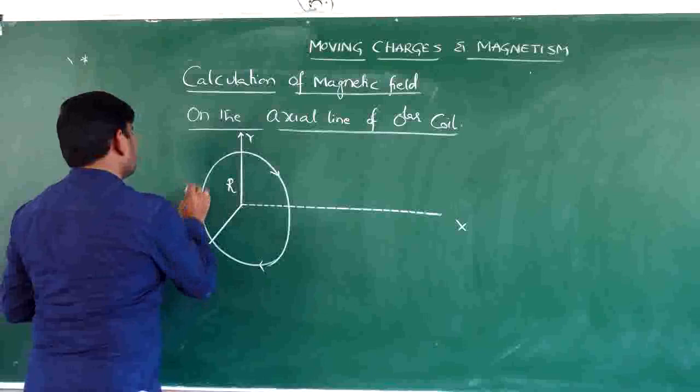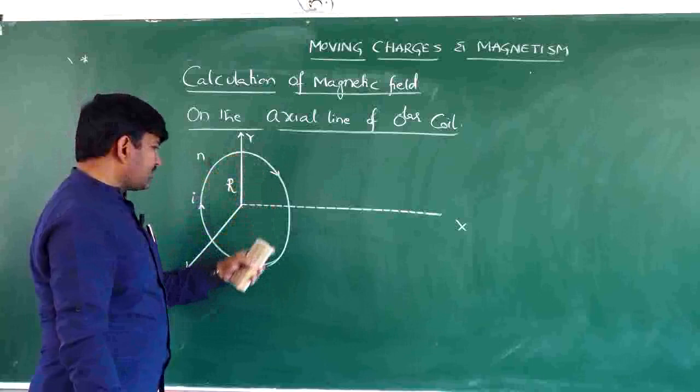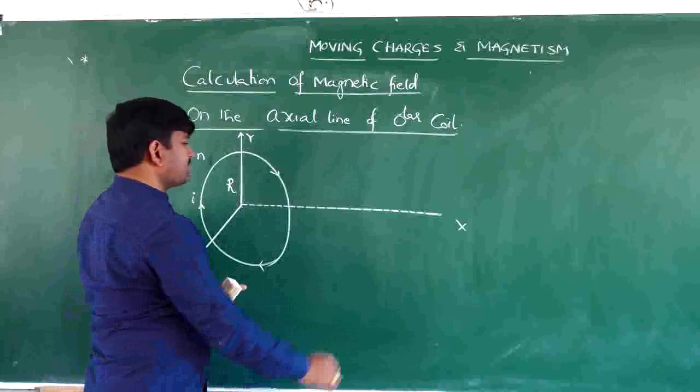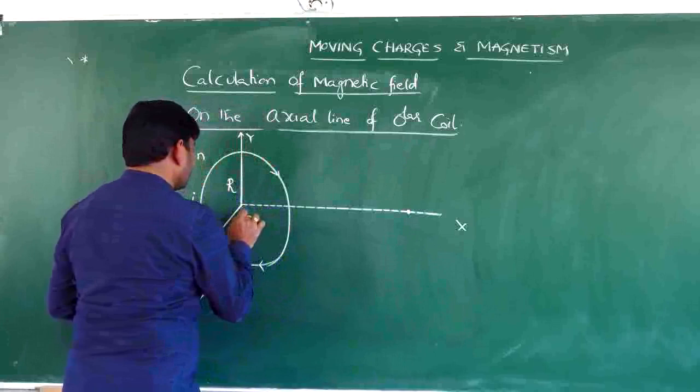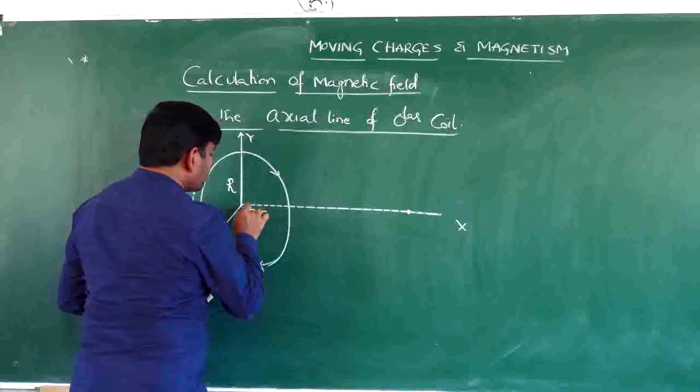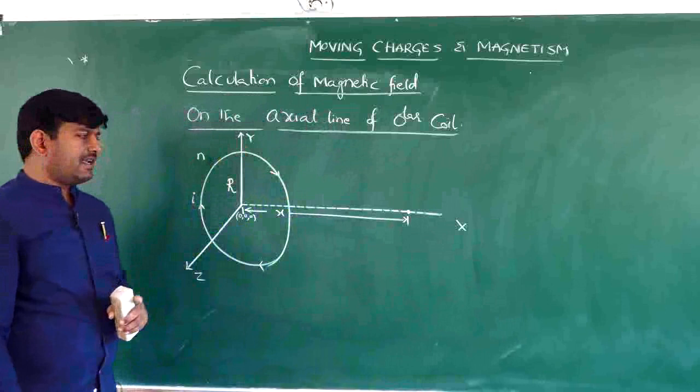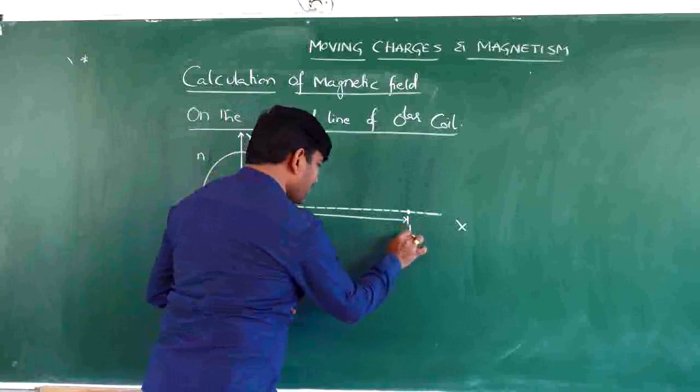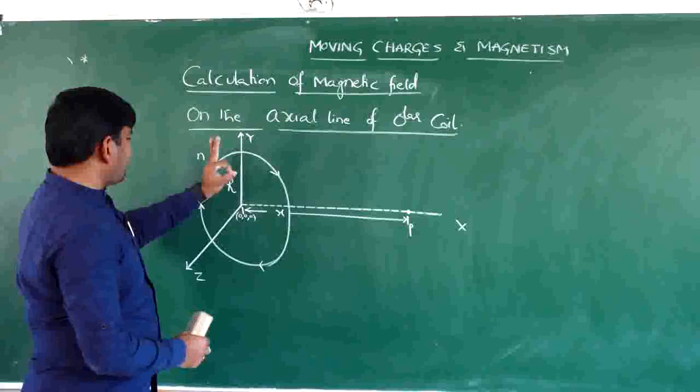Let i be the current in this coil and n be the number of turns. I want to find the magnetic field at a point P at a distance x from the center of the coil. This is the origin (0, 0, 0) and x represents the axial line distance. I want to calculate the magnetic field at point P.